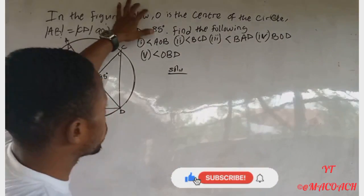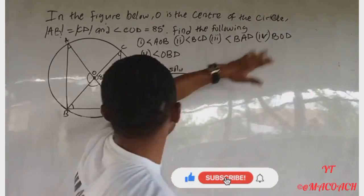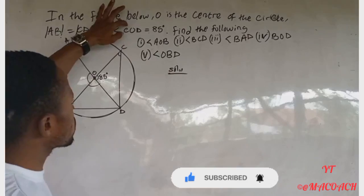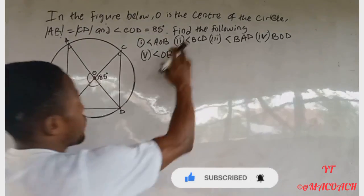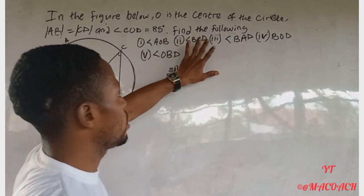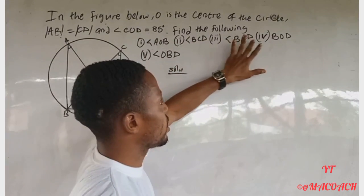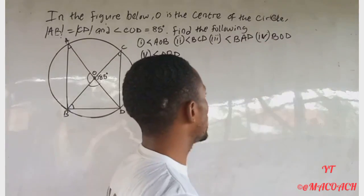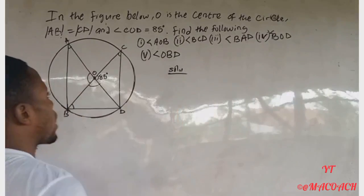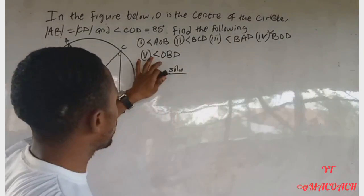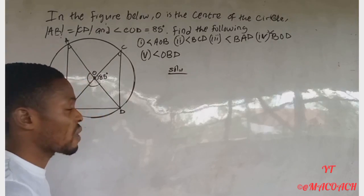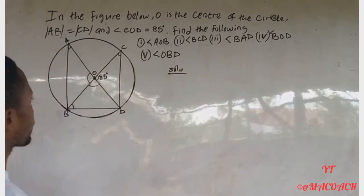The question says: in the figure below, O is the center of the circle. Side AB is equal to CB, and angle COD is equal to 85°. Find the following: angle AOB, angle BCD, angle BAD, and angle BOD.